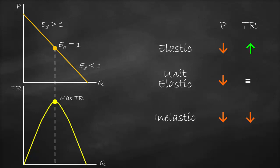What can we conclude from these two graphs? If any company hired you as an economic consultant and asked what is the optimum quantity to maximize total revenue, you need to check elasticity. If the product is relatively elastic, decrease the price to increase total revenue. If the product is relatively inelastic, increase the price to increase total revenue — until you reach unit elastic, because at unit elastic we have maximum total revenue, and that is our target.